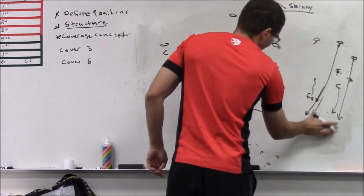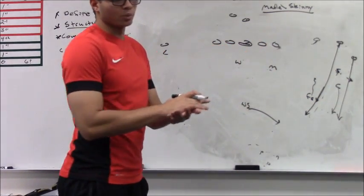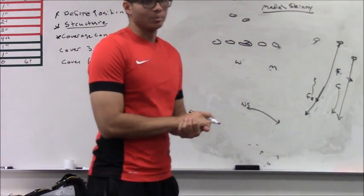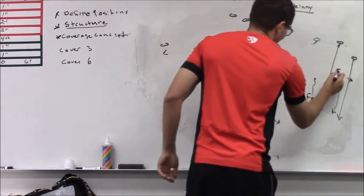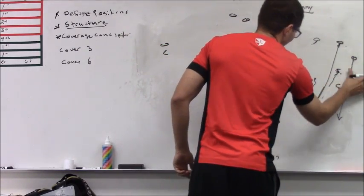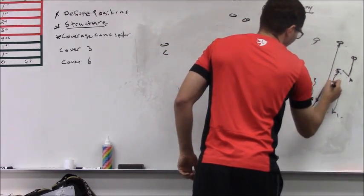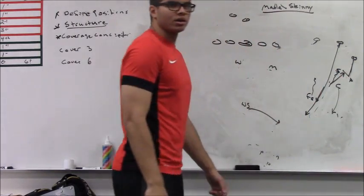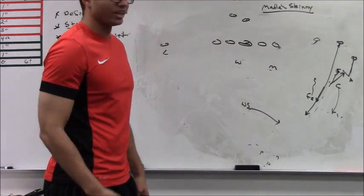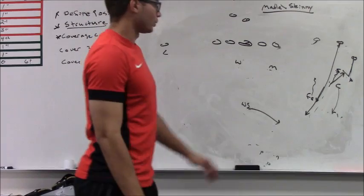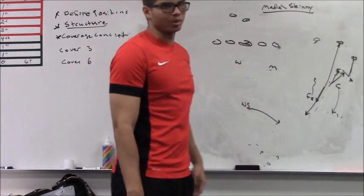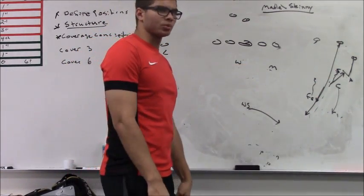So, the first one would be any quick game routes by the number 1, your strong safety is going to be late to. Because your strong safety is having to carry the vertical of 2 until he gets an under call by the corner and then come off and drive on the hitch, the slant, the quick game. So, any quick game by number 1 is going to be a problem.